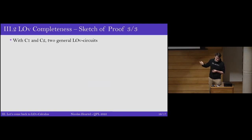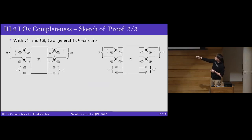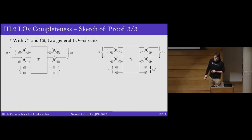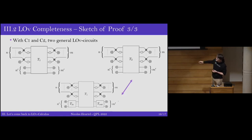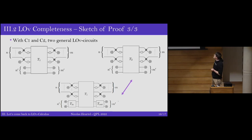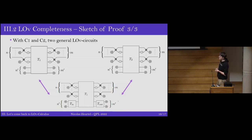The question is what the normal form is for any LOv circuit, including those with zero sources and detectors. If two circuits T1 and T2 have the same semantics, we can always write T2 as T1 composed with some boxes. Since these extra boxes are only zero detectors and sources, we can absorb them into the zero sources and detectors. This gives us a normal form for the full LOv calculus, and using this we proved the completeness of the language.